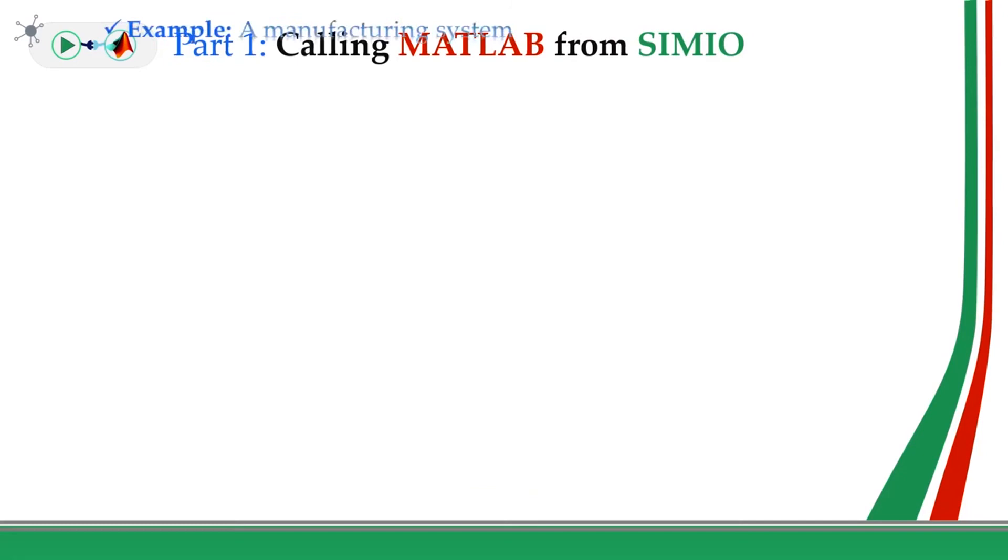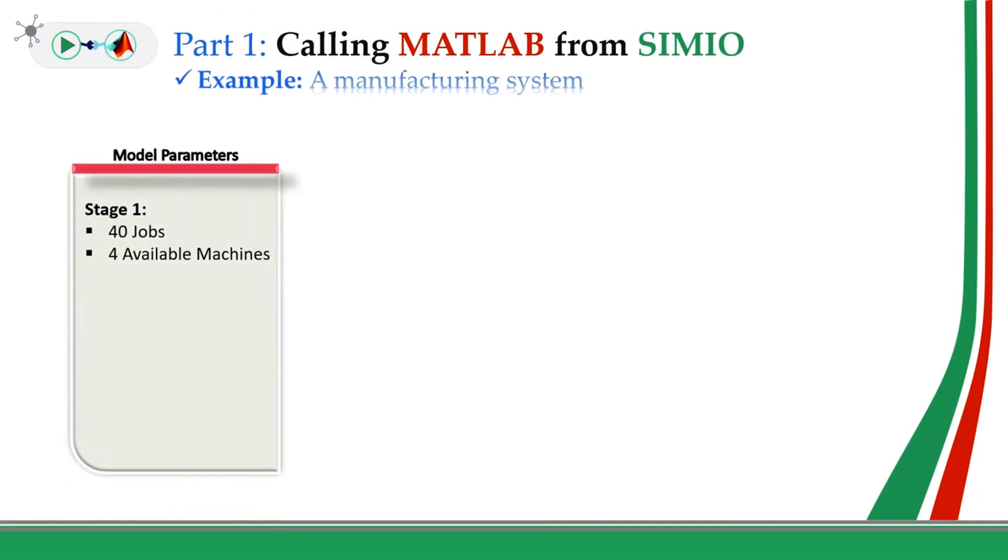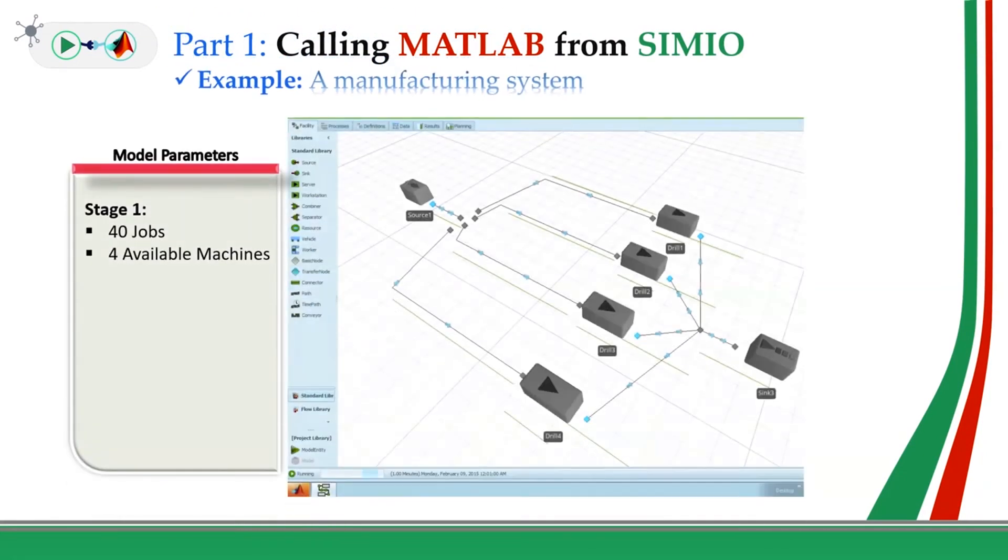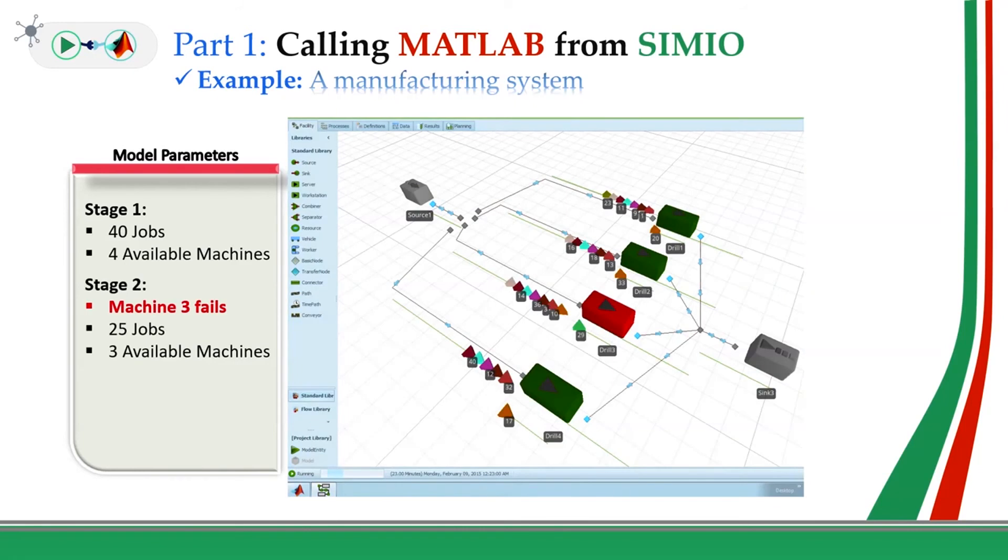Consider a manufacturing system with 40 jobs, with 4 available machines like this. So we start the model and we distribute the jobs among the machines. At some point, one of the machines may fail, like machine 3, the red one, as you can see here. So what we need to do is to redistribute all of remaining jobs among all available machines, which are basically machine 1, 2, and 4.